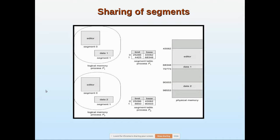Suppose we have two segments — this is one segment and this is another — and each has its own segment table. These two segments belong to two different users. In a shared working environment, the user is opening the editor, which is a shared segment. Segment zero is shared by both users — process P1 and process P2. This is a common segment used by both, but the data used by each process is different.